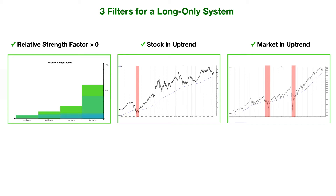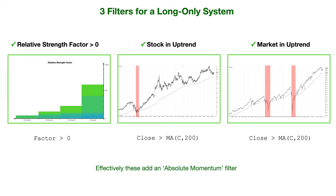In RealTest, the equivalent statements are: our factor is above zero; the close of the stock is above the moving average of the close over the past 200 bars; and the same is true for the market — we check the close of SPY against its 200-bar moving average. These add what we call an absolute momentum filter. So we have relative momentum when ranking stocks against each other, and absolute momentum ensuring we don't enter in downtrends. Together, these are sometimes referred to as a dual momentum system.